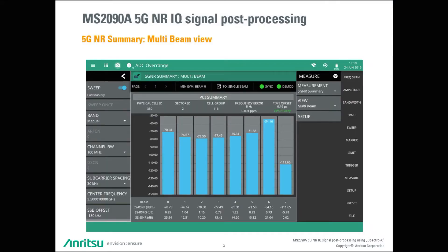Here on this slide we see the demodulation results of the MS-2090A 5G new radio summary multi-beam feature. It is obvious that the measured 5G antenna is radiating seven beams, where beam number seven is providing with minus 54 dBm the strongest signal at the measurement location. Besides, the observed signal interference noise ratio is 21 dB, which is indicating a very clean signal.